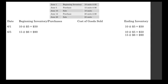On June 5th, we purchased 15 units at $6 apiece. This way we know which units came in first and which came in last, so that when we have to make a sale, we know which ones to take from.